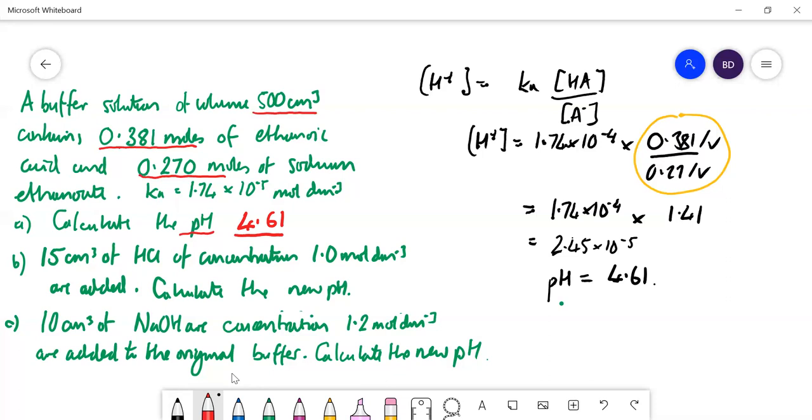And now we're going to move on to part B. We're going to see what happens when you add a bit of hydrochloric acid to it. Now, just as a common sense check, when you add a bit of HCl to that, the pH is going to go down a bit. So the answer is going to be lower than 4.61. Another common sense check, it's a buffer. So it should be a bit lower, but it shouldn't be a lot lower.